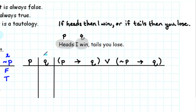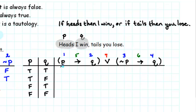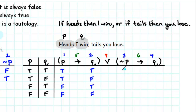Since we have two simple statements, we have four different cases to consider. Starting inside the parentheses: P alternates true, true, false, false, and Q alternates true, false, true, false. In the second set of parentheses, not P is the negation of P: false, false, true, true. And Q again is true, false, true, false. Now we'll evaluate the conditionals. A conditional can only be false if the first part is true and the second part is false.